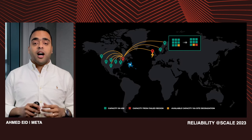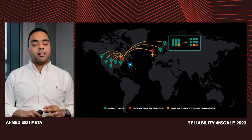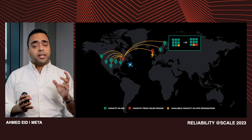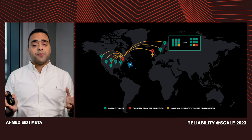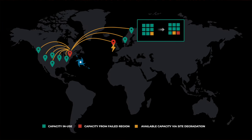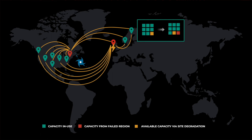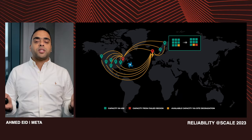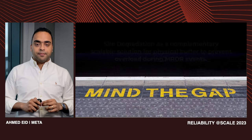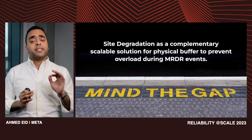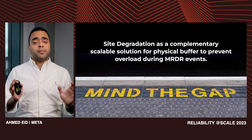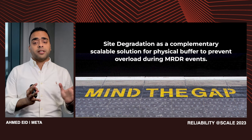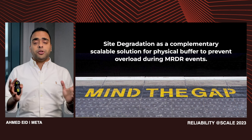This is a clear trade-off between adding capacity and degrading our product during MRDR. Site degradation strategy works well for two-region failures and we are iterating on it to minimize the impact on users. After applying site degradation techniques — like service-level degradation, request shedding, or delaying non-critical requests and jobs — we free up capacity that can be used as a complementary solution for the DR physical buffer. The key takeaway: site degradation can be used as a complementary, scalable solution for the physical buffer to prevent overload during MRDR events.